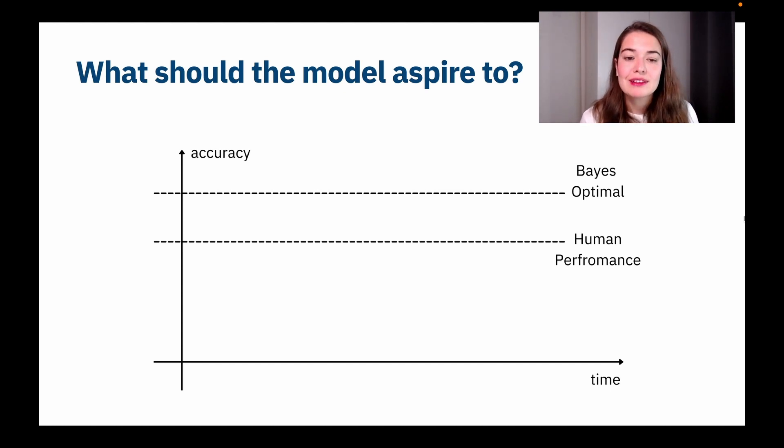Then we have Bayes optimal error, and this error is basically the amount of error that is possible to achieve at the least. So you cannot go lower than this amount of error, but of course right now we're looking at an accuracy graph. It is the amount of performance that you can achieve max. So there is no way, human or machine, to go beyond this level.